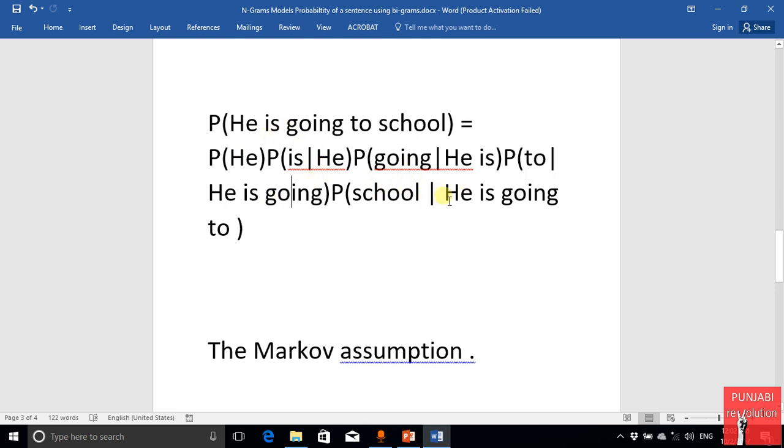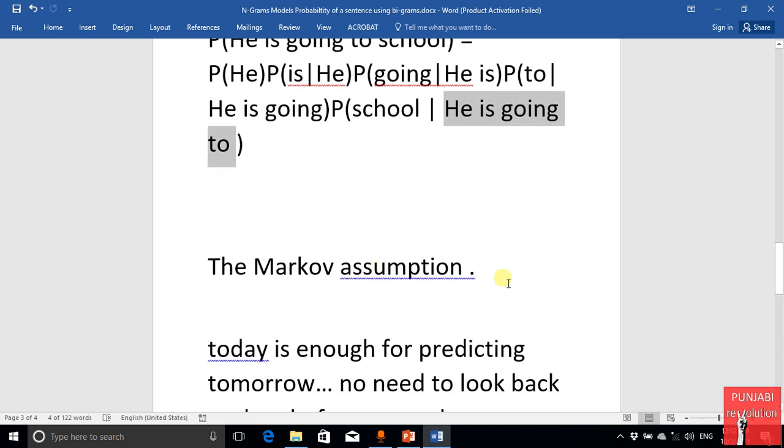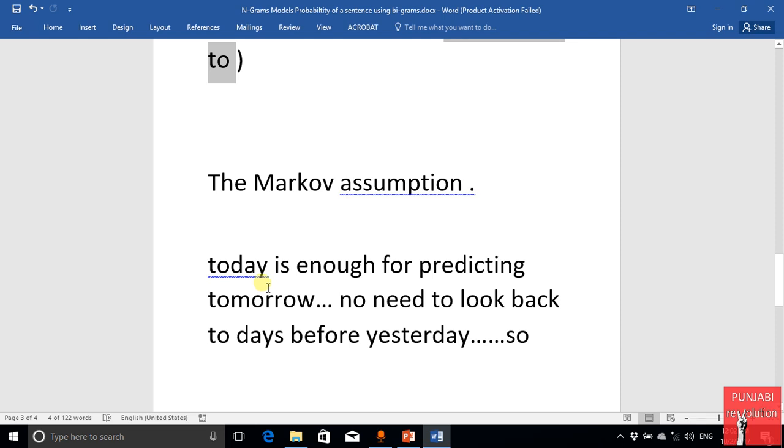But you know here we are predicting the school word given these four words, so we are looking back too much. It just doesn't make much sense to go beyond so many words. So here we use the Markov assumption. The Markov assumption is a very beautiful assumption - it says today is enough for predicting tomorrow. So we just need to look back one word instead of going all through the sentence.